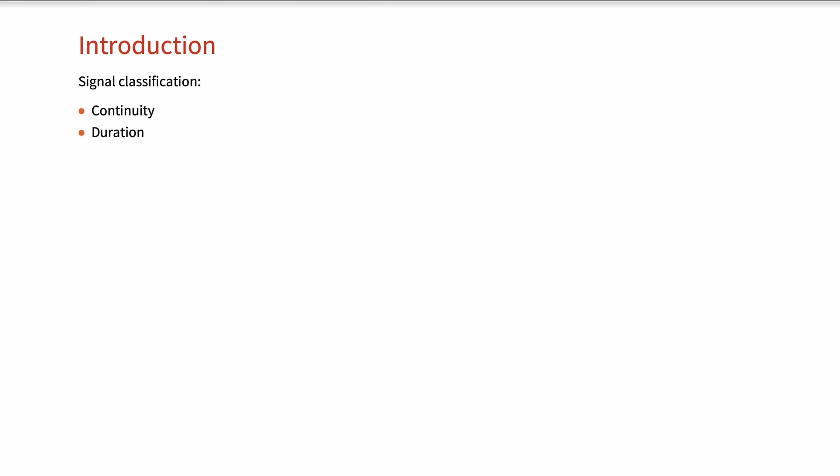The classification categories are: continuity, duration of the signal, symmetry, periodicity of the signal, and the strength of the signal.